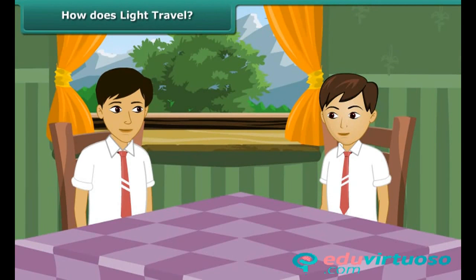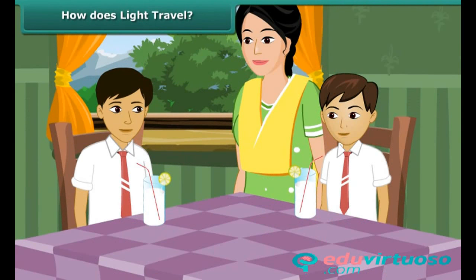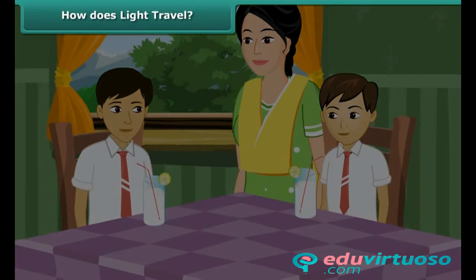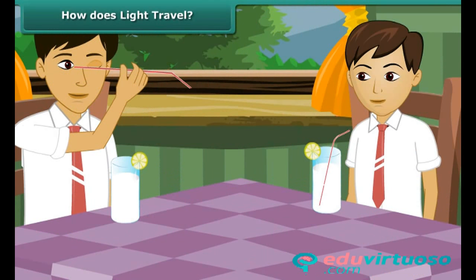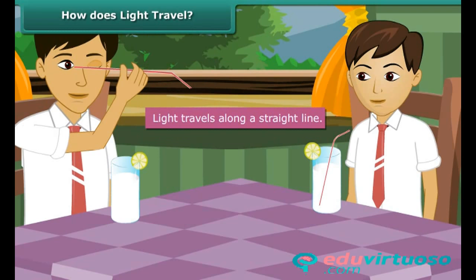You and your brother Ashish have just returned from school. Your mother gives both of you lemonade to drink. Your mischievous brother picks a straw out from the glass and tries to look at you through it. After a while, the thin straw bends. Now when Ashish tries to look at you through it, he is unsuccessful. This proves that light travels along a straight line.